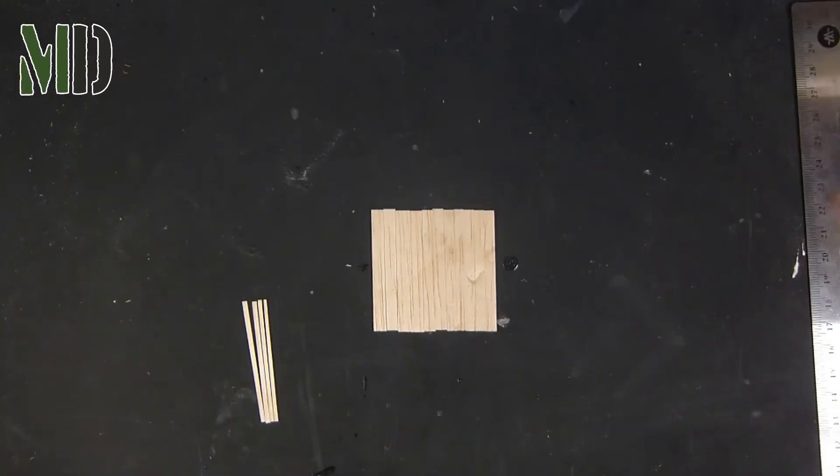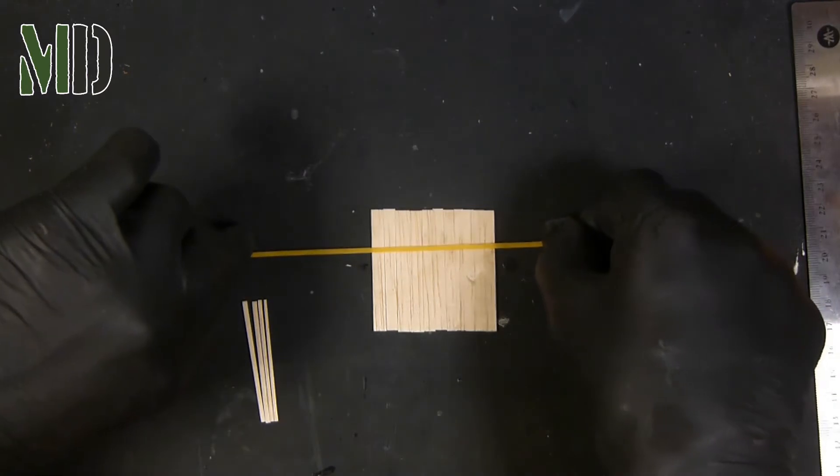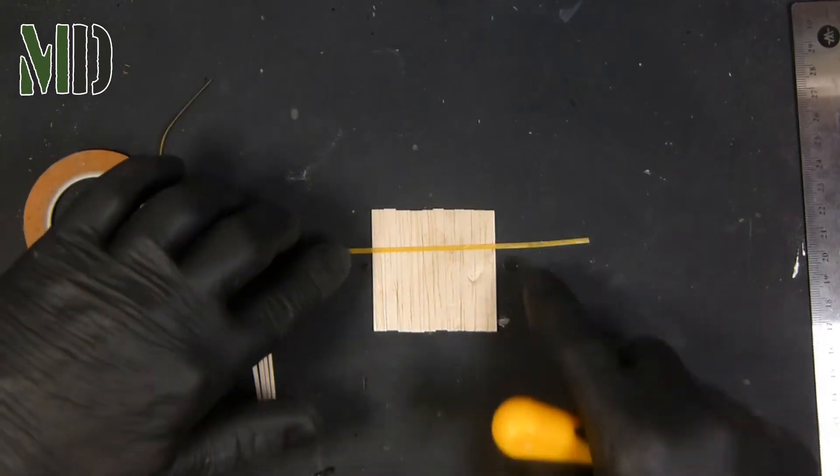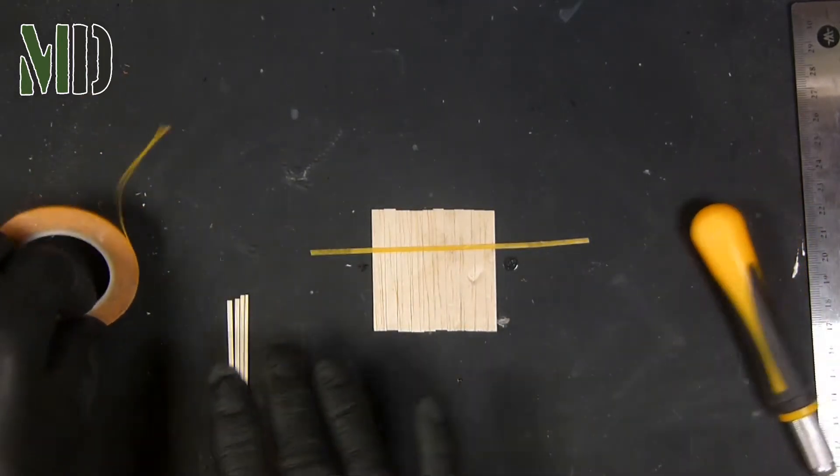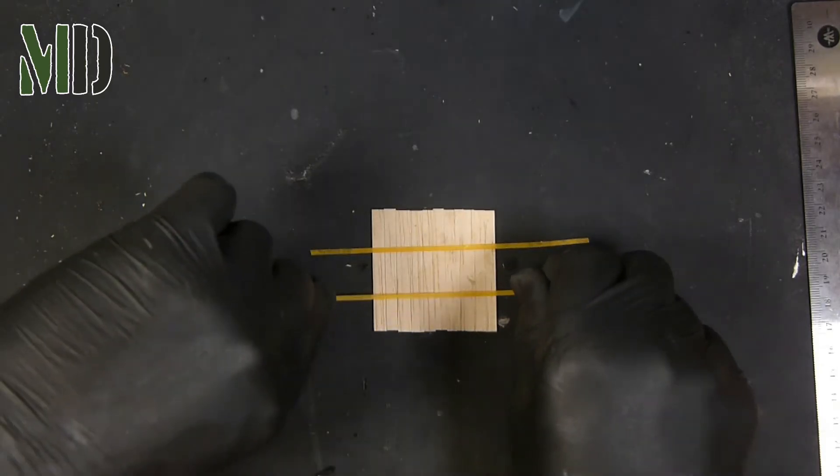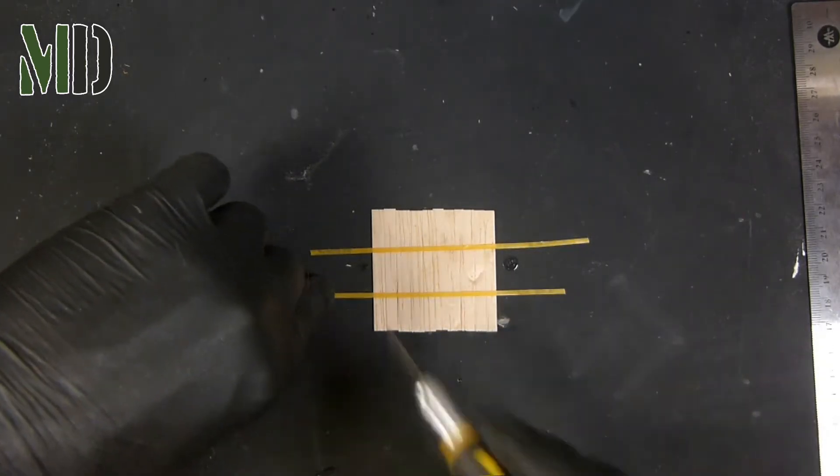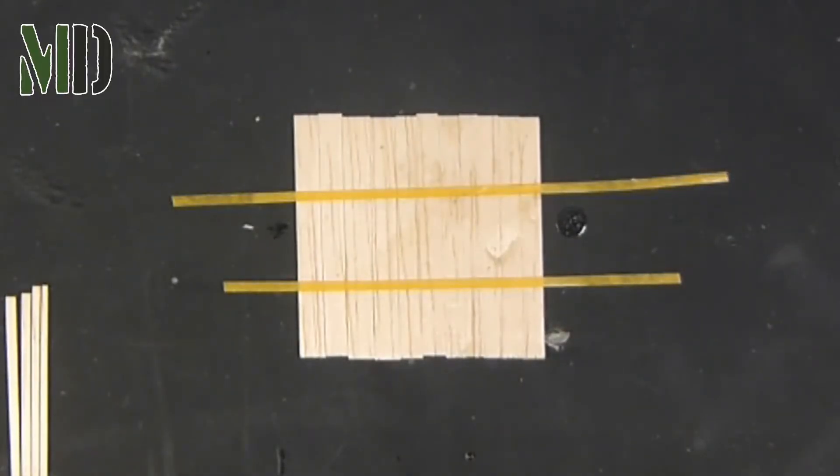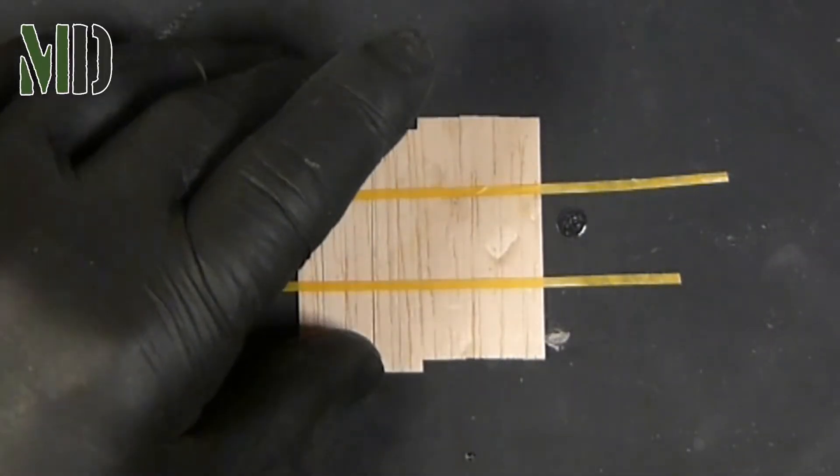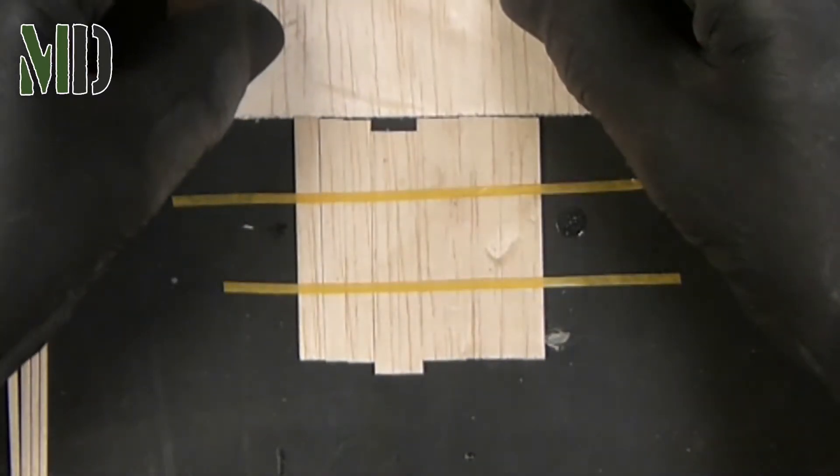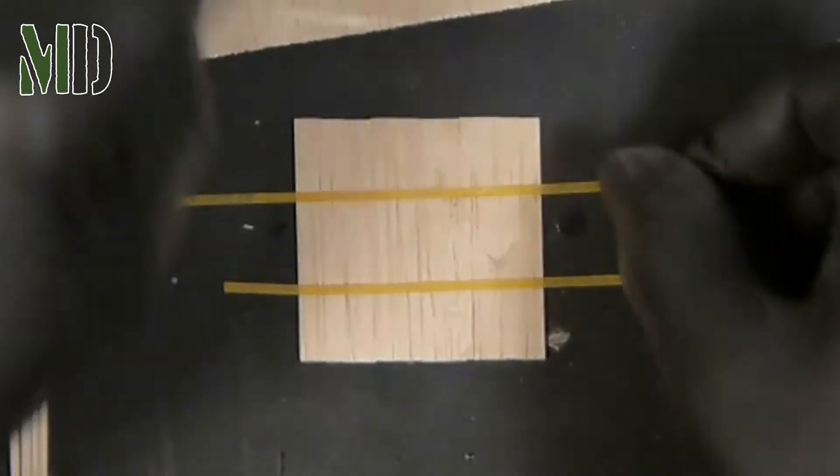Then I secure the planks of the fence panel with masking tape just to keep it in place while I glue it. Make sure the planks are aligned and then make sure it's all secure with the masking tape before I start gluing.